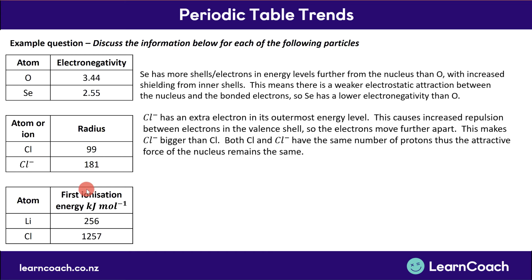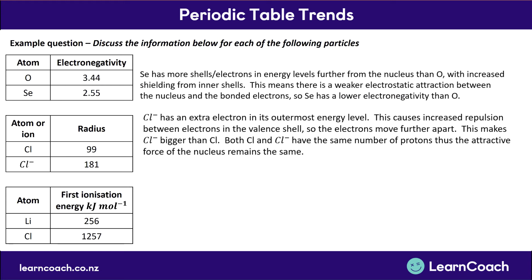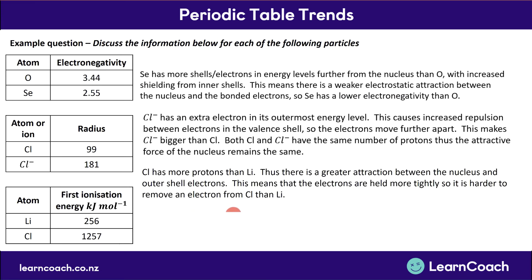Let's look at the last one: first ionization energy in kilojoules per mole — lithium versus chlorine. Chlorine has a lot more energy required to remove its electron than lithium. Lithium is on the second energy level with one valence electron, and chlorine is on the third level with seven valence electrons. The valence electrons of Cl are in the third energy level, meaning they are located further away from the nucleus. However, the distance and shielding increase is not as significant as the very large increase in protons between lithium and chlorine.